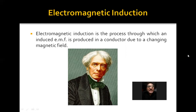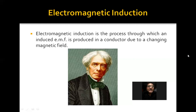By changing the magnetic field passing through a conductor, we can induce electricity — we can induce EMF or current — in that conductor. This is called electromagnetic induction. It was first discovered by Michael Faraday. He is a big name in electricity. Michael Faraday was the first scientist who, by chance, discovered that by changing the magnetic field, we can create electricity or EMF in a conductor. This process is called electromagnetic induction.